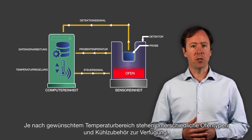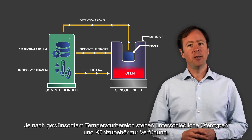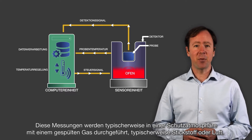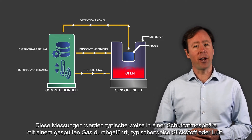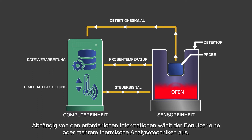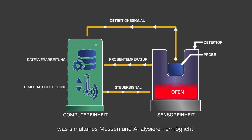Different types of furnaces and cooling accessories are available depending on the required temperature range. These measurements are typically done in a controlled atmosphere using purge gas, typically consisting of nitrogen or air. The temperature control, data recording and analysis are all computer controlled. Depending on the information required, the user will select one or multiple thermal analysis techniques. The computer can be connected to several instruments which have other types of measuring techniques, enabling simultaneous measuring and analysis.